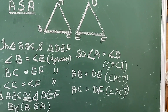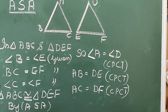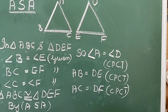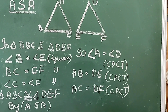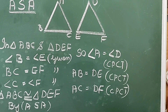Now let us discuss the second condition, that is ASA — Angle, Side, Angle. The condition says that two triangles are congruent if two angles and the included side of one triangle are equal to the corresponding two angles and the included side of the other triangle. This is known as ASA congruence.